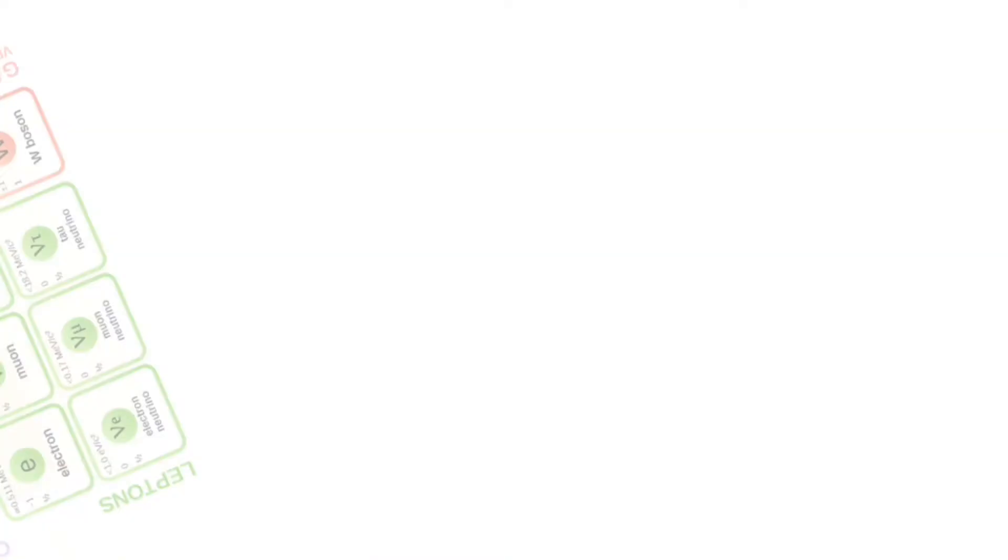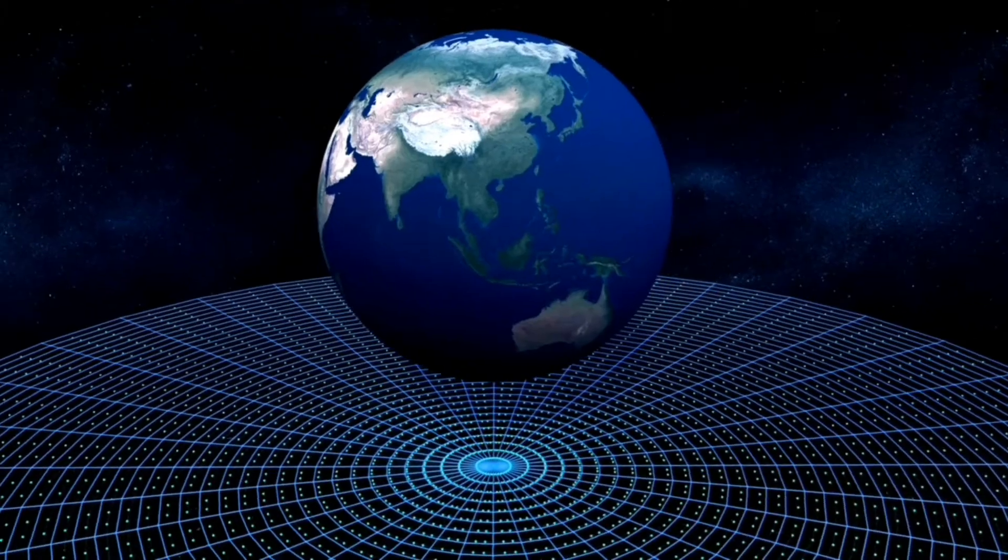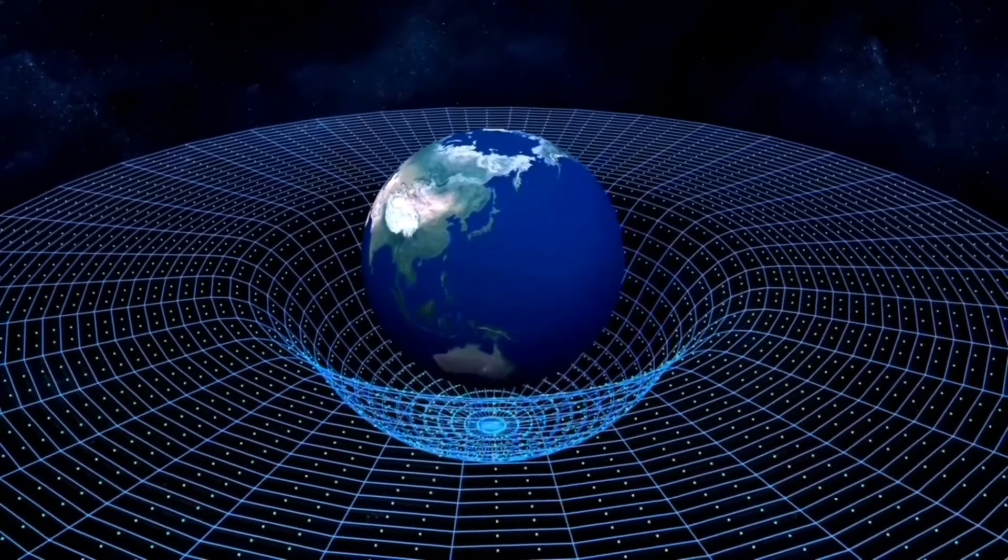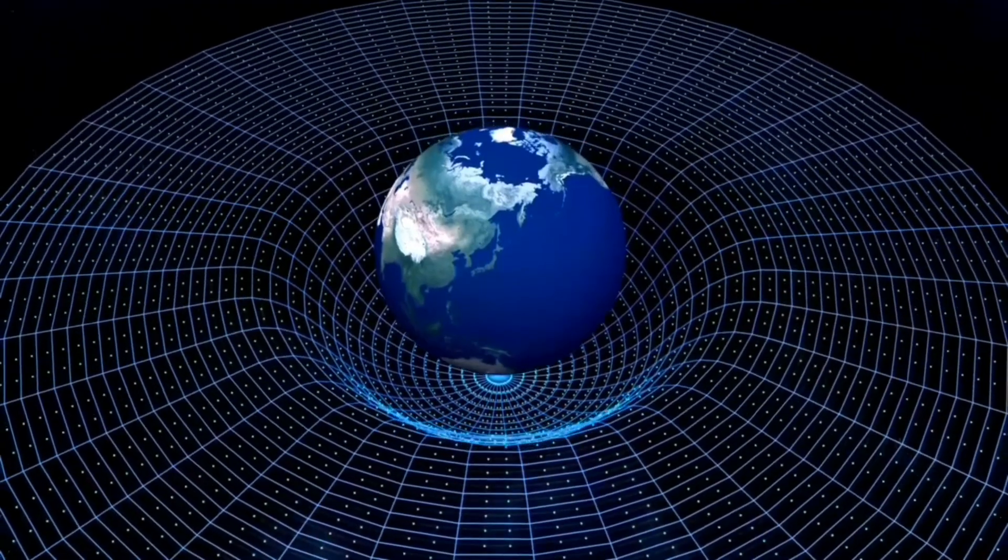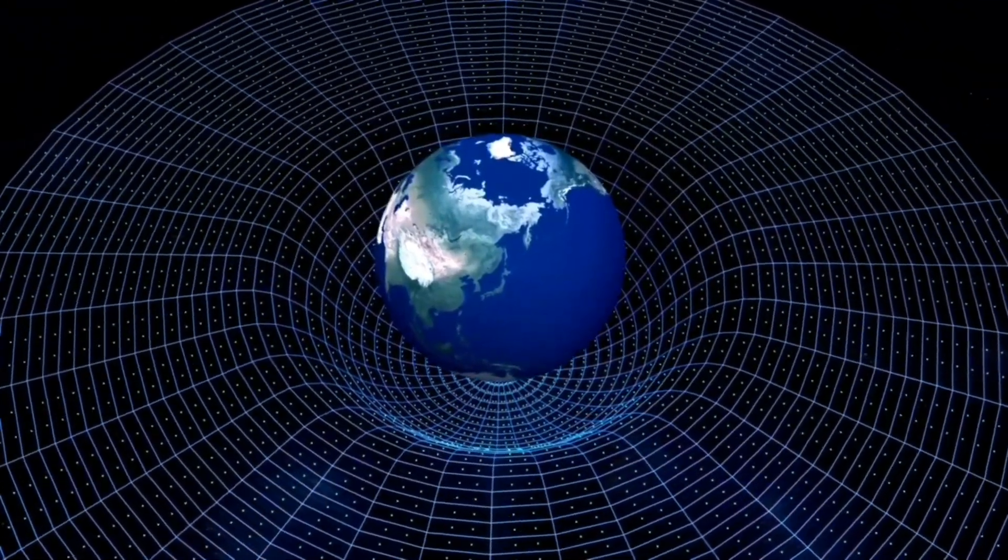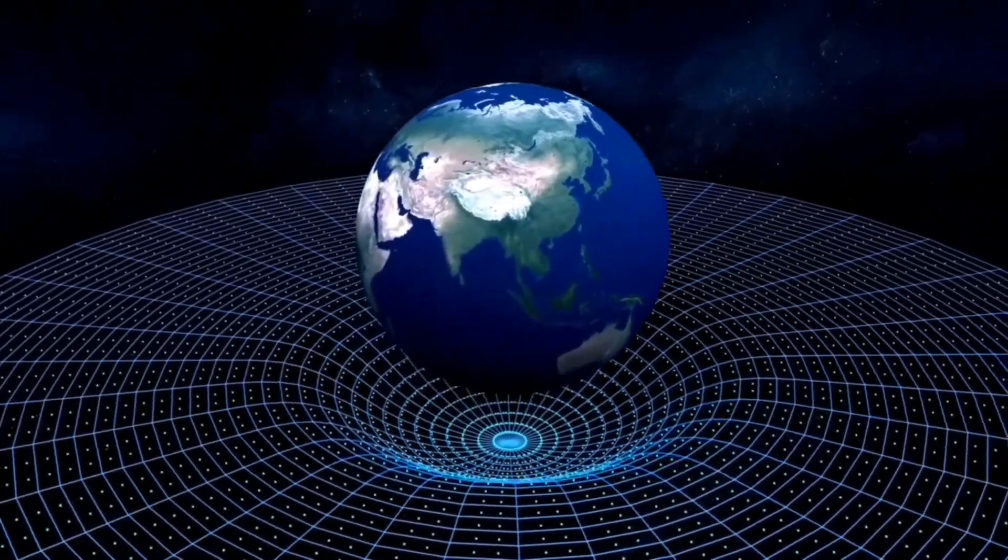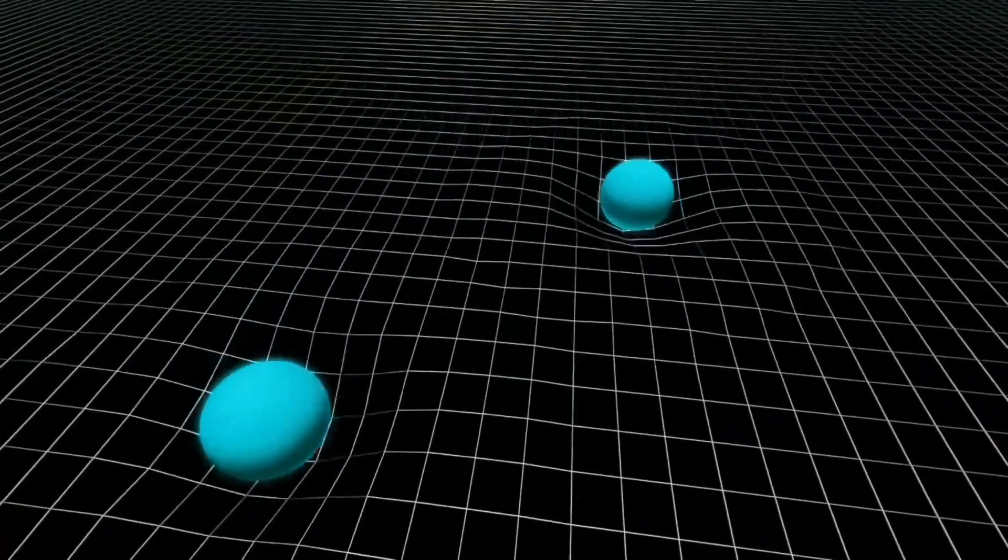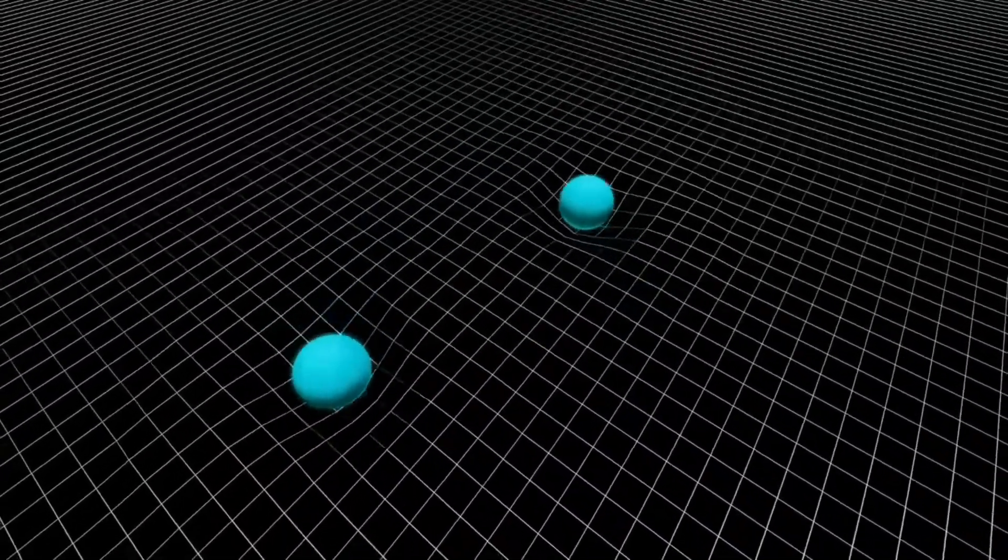Graviton particle is thought to be the carrier of the gravitational field. According to Einstein's general theory of relativity, gravity as a distortion of space caused by massive objects generates a gravitational field by warping the geometry of the surrounding spacetime. The detection of gravitational waves provides some clue that gravitational force maybe exists in the form of particle-wave duality.